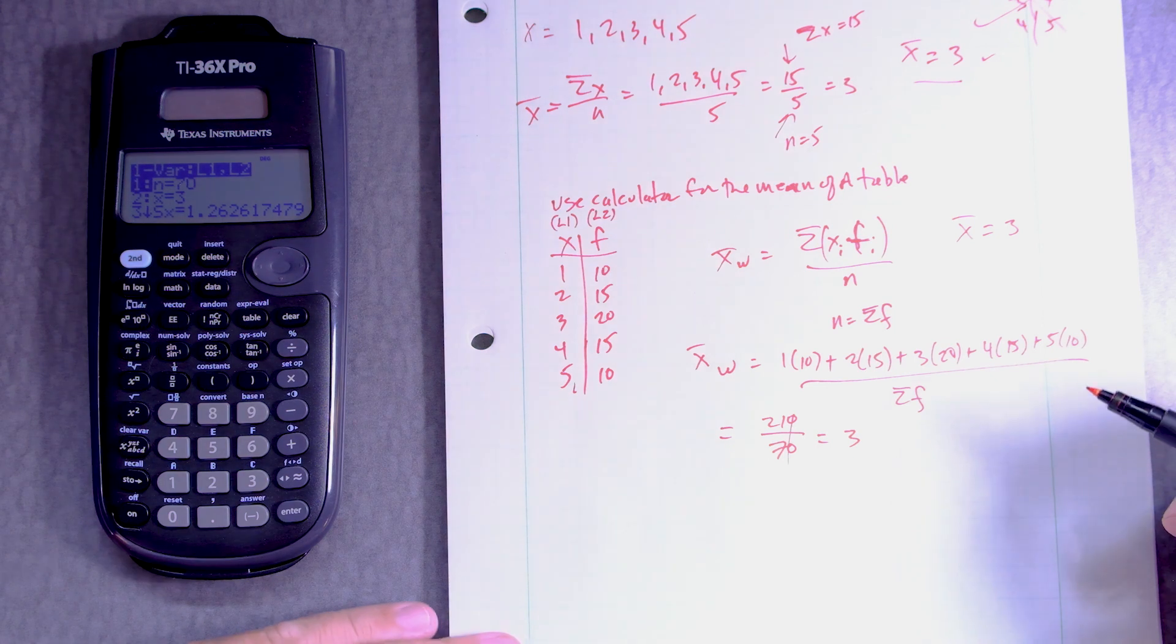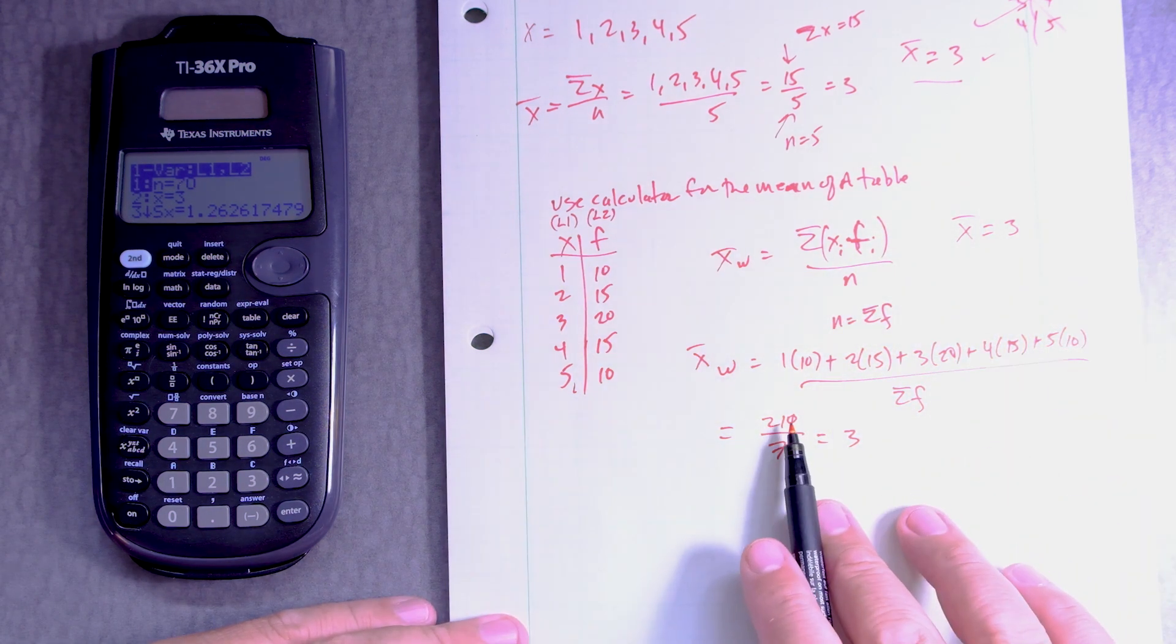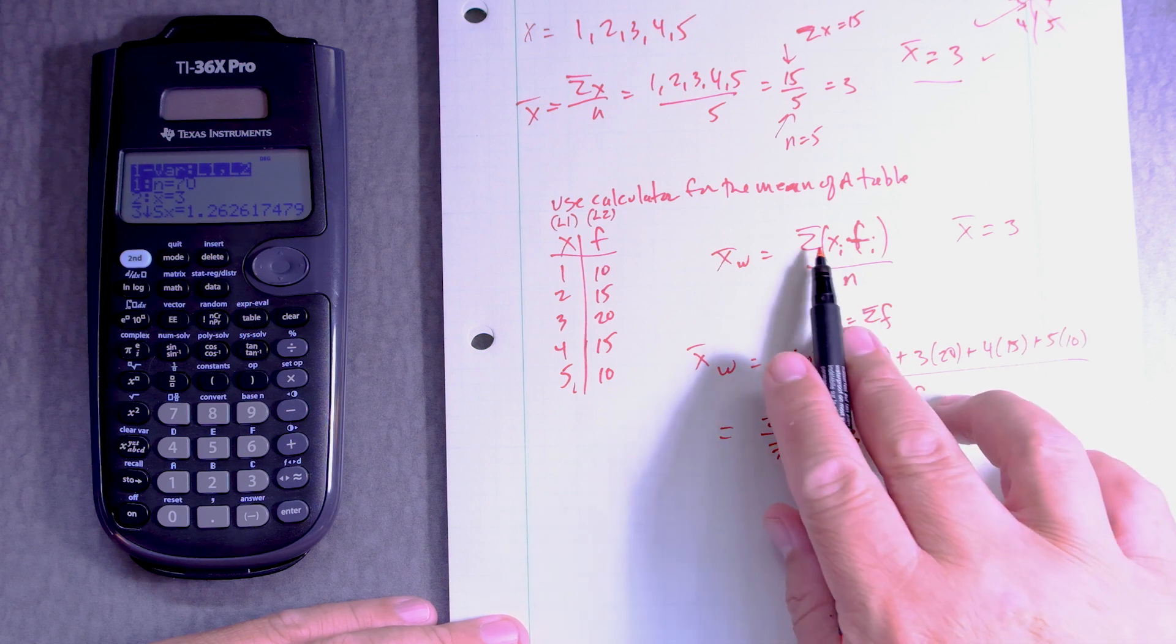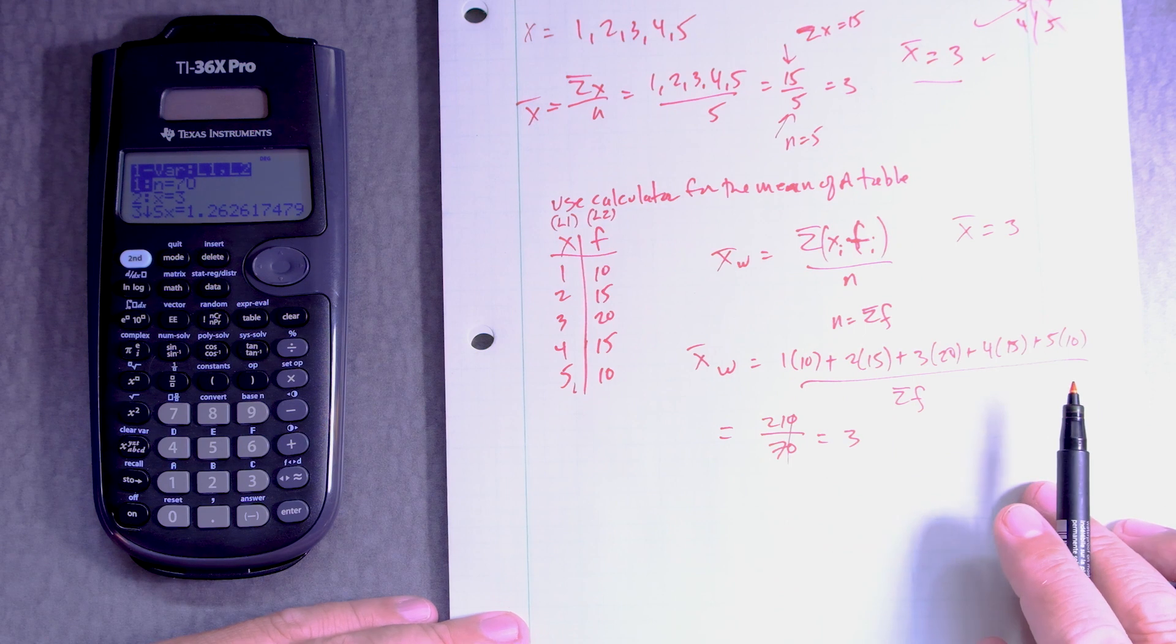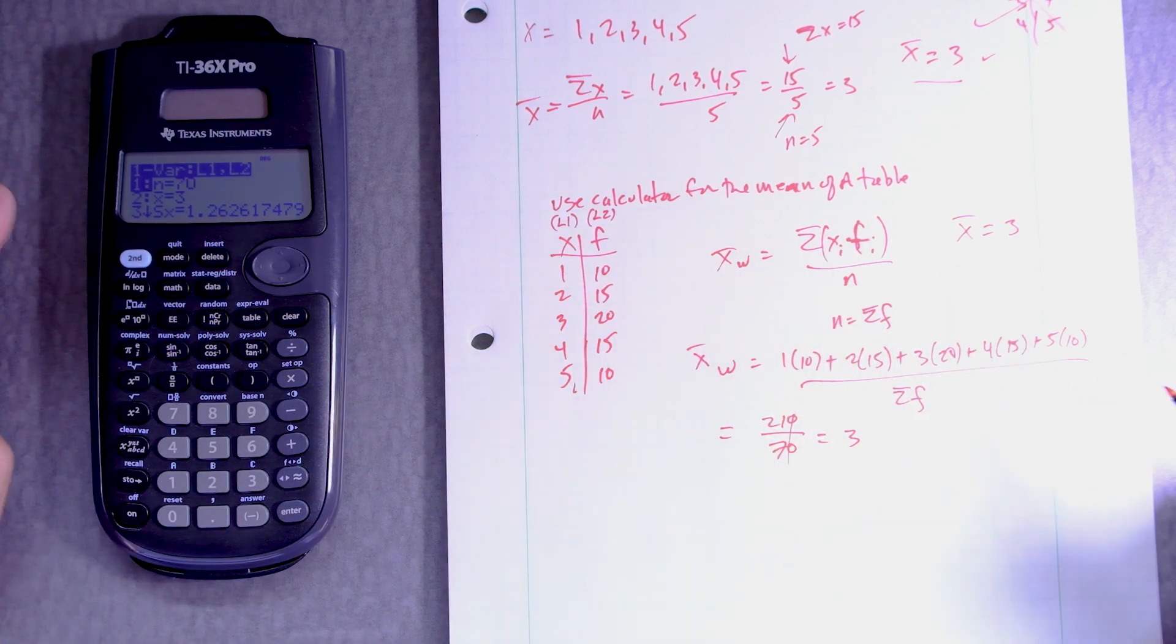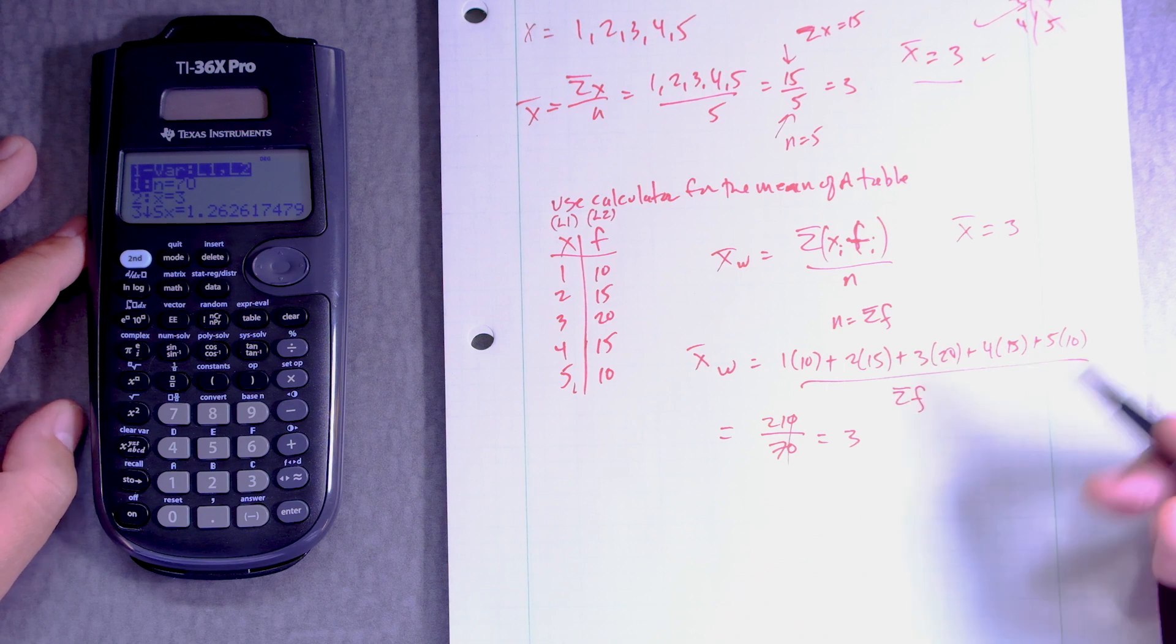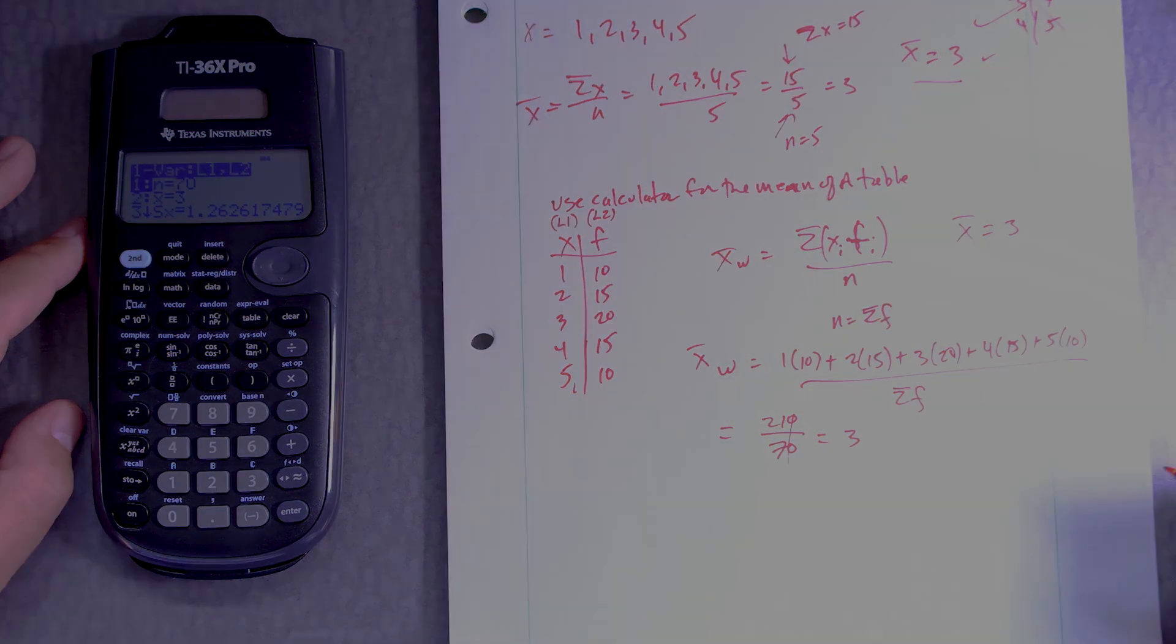Okay, so the calculator calculated the average for us and also told us the sum, right? The sum that is needed divided by how many we have. So in conjunction with the calculator you can go back and forth with helping to see if your understanding is right.